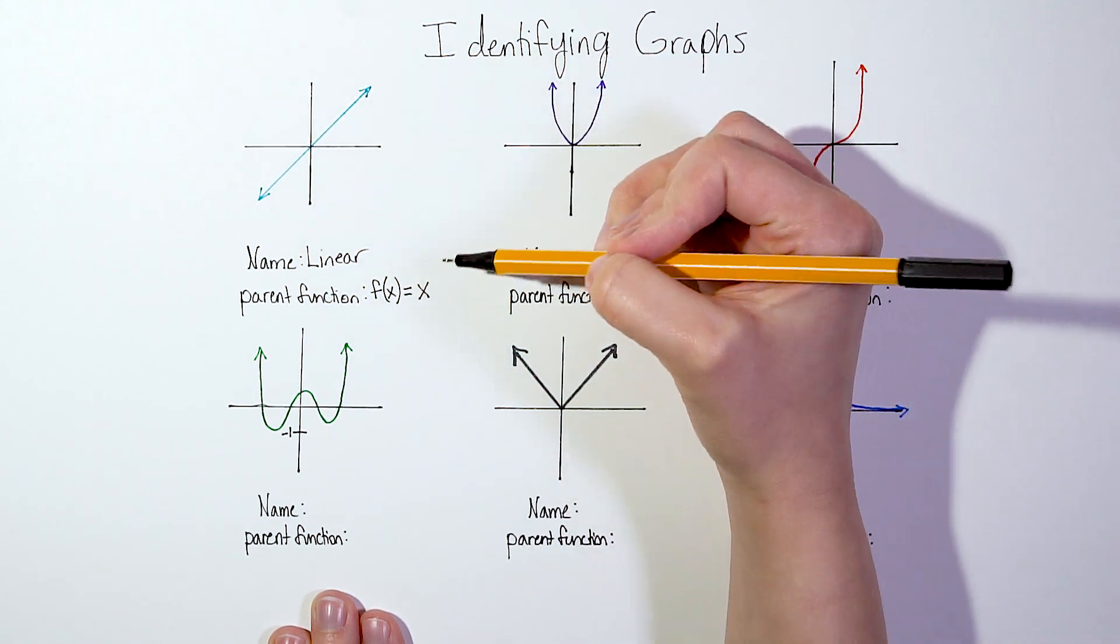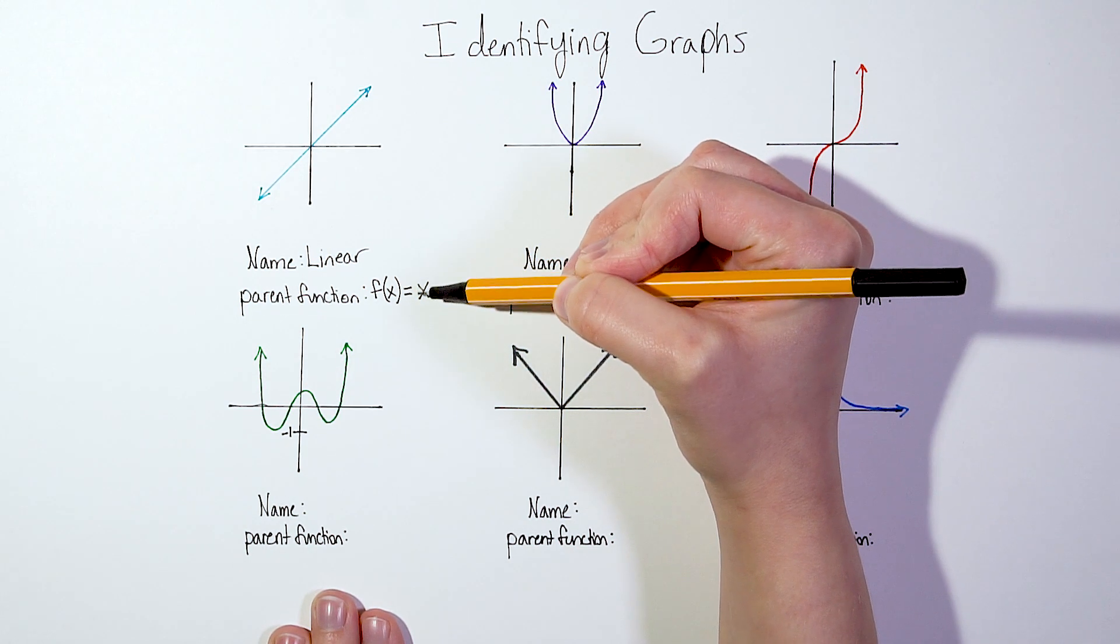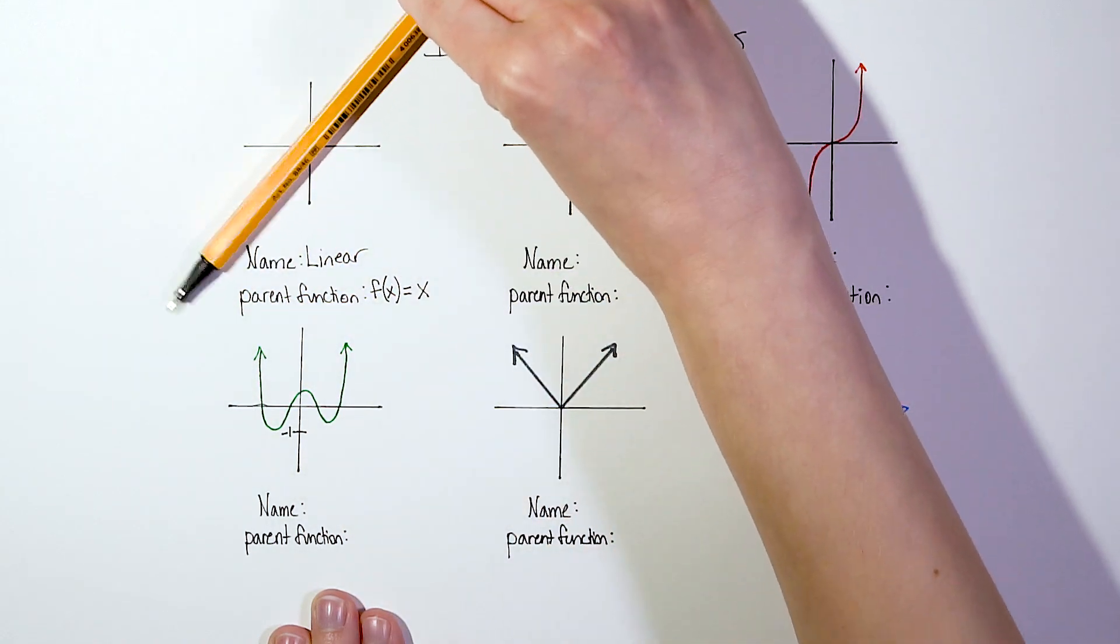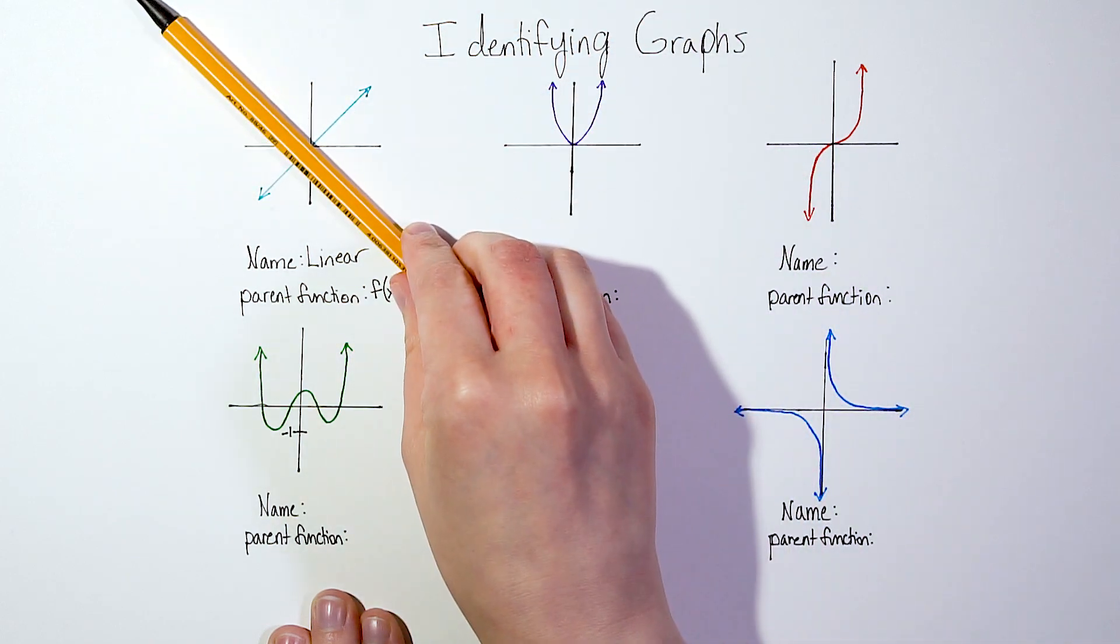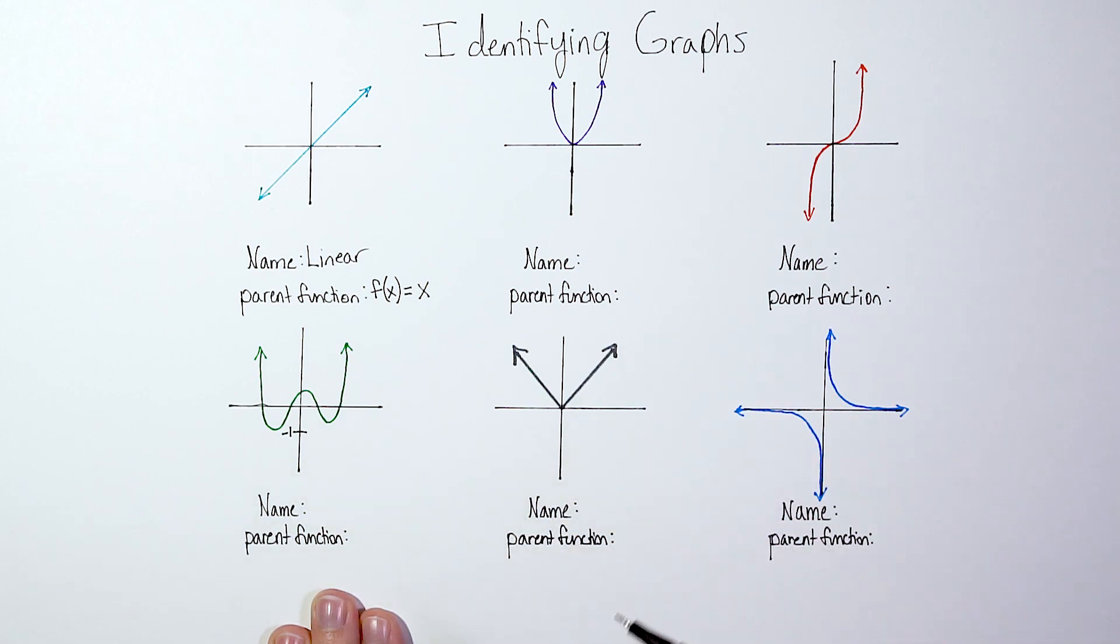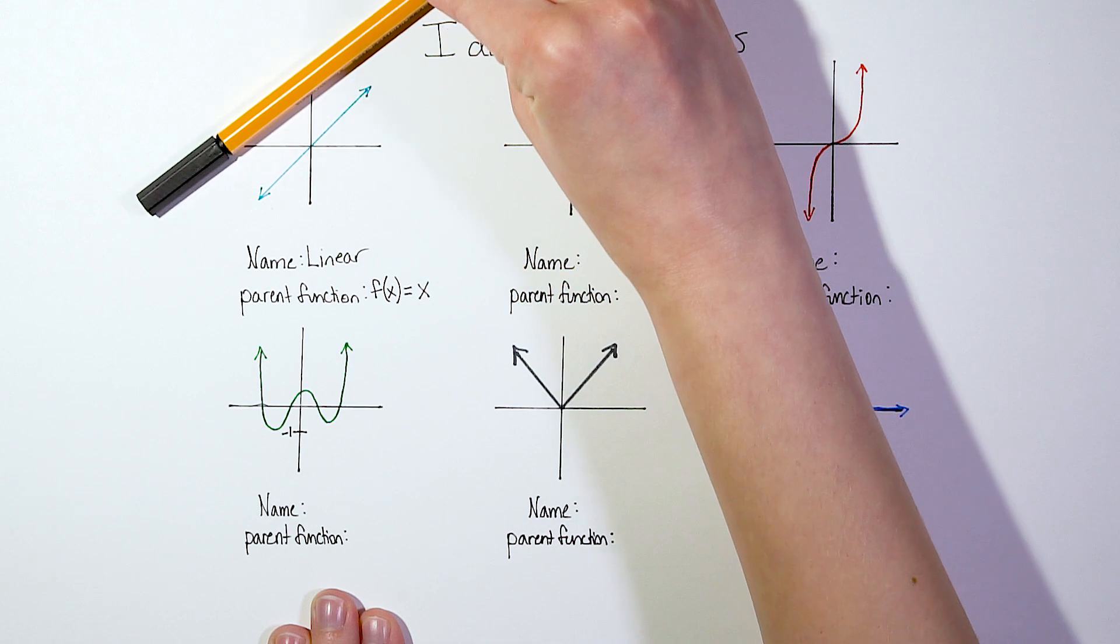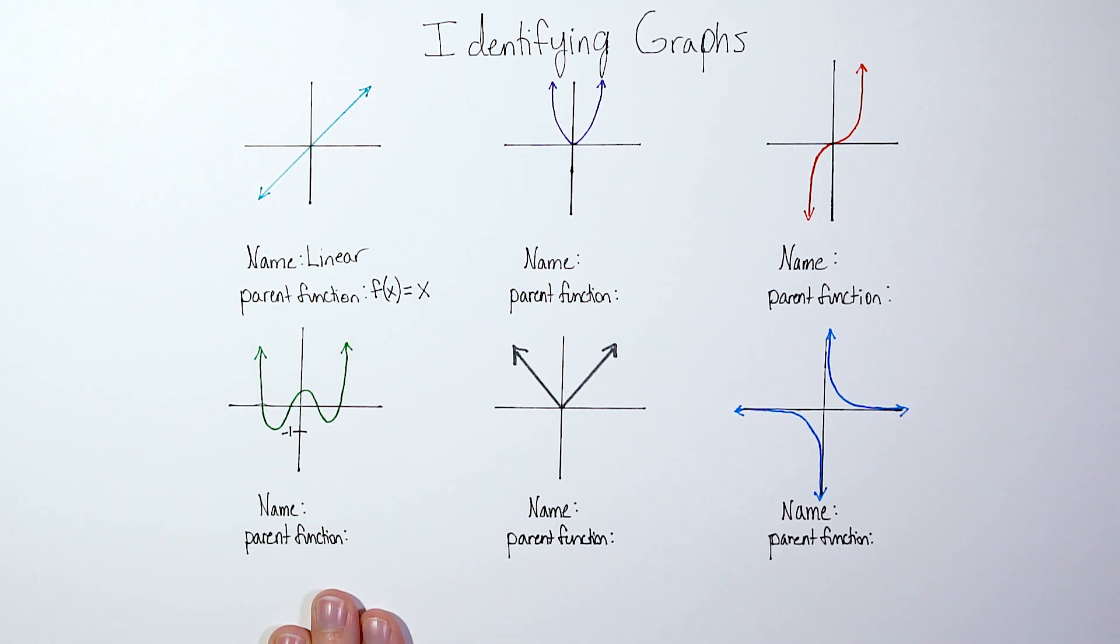Now if we were to change those values in the equation, let's say we were to have a different slope, our line could be more steep or less steep or it could be a negative slope. And that could change the direction. Or if we were to add or subtract values here, then it could be shifted up or shifted down. So again, the parent function is just the most basic equation that we can get.